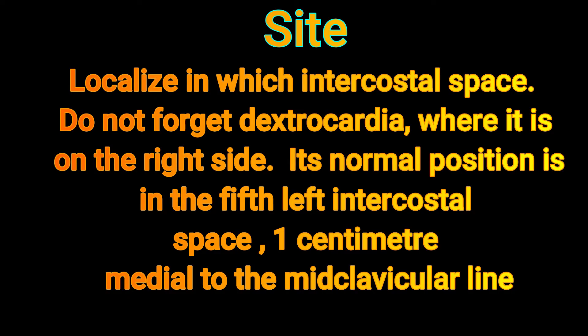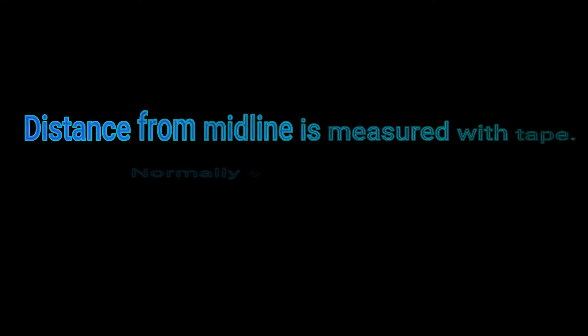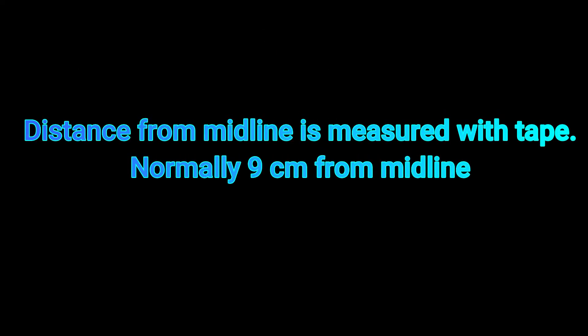The normal position of the apex beat is in the fifth left intercostal space, one centimeter medial to the mid-clavicular line. The distance from the midline is measured with a measuring tape; normally it is nine centimeters from the midline.